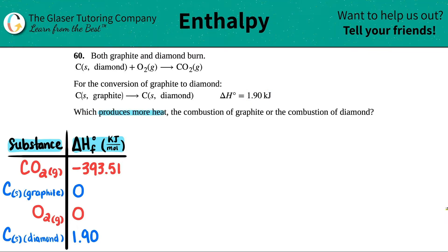Now the question is which produces more heat, the combustion of graphite or the combustion of diamond? It looks like we just have to have two formulas here: combustion of graphite and combustion of diamond. Since they already gave me the combustion formula for diamond, and I know that this is a combustion formula because it's burning in air and one of the products is CO2, I'm going to start with that.